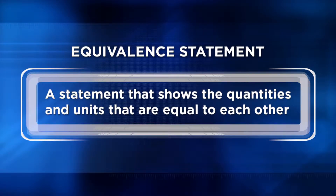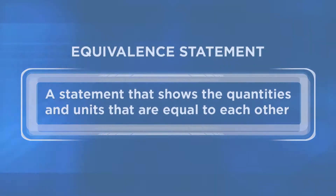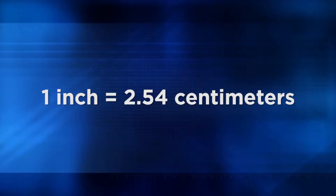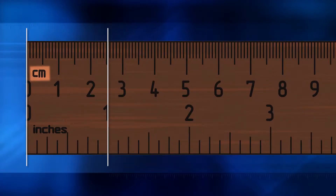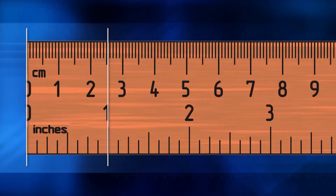Chemists call statements like 'one dozen equals 12' an equivalent statement. An equivalent statement is a statement that shows the quantities and units that are equal to each other. And if used properly, equivalent statements can be powerful tools whenever we need to do problems in which conversions of units are required. Another example of an equivalent statement would be one inch equals 2.54 centimeters. The distance is the same — it's just a matter of which unit we decide to use, centimeters or inches. Of course, chemists always prefer metric units.